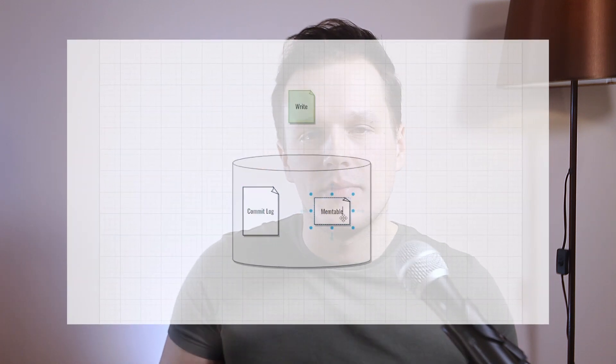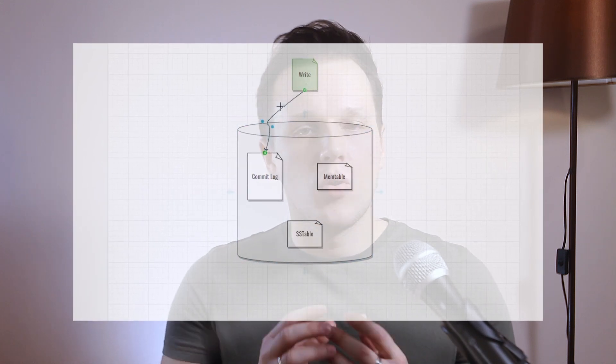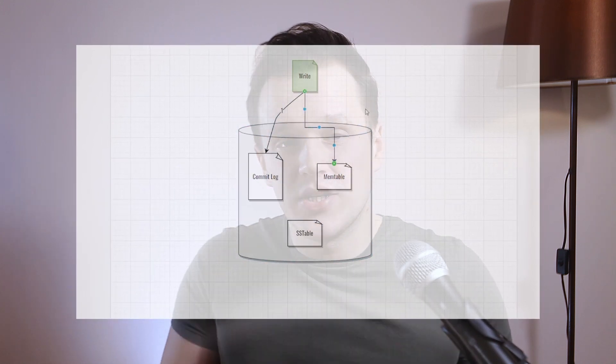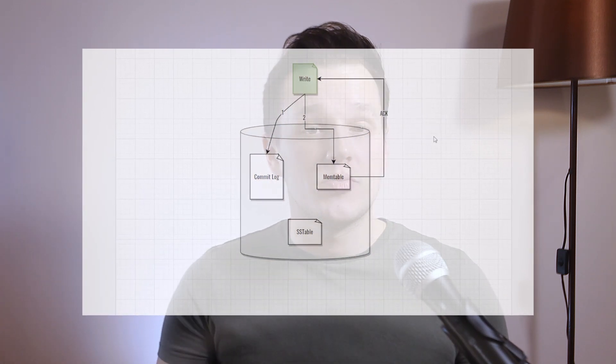Memtable is an in-memory data structure that is periodically written to immutable files called SS tables, or sorted string tables. In a nutshell, a memtable represents a row of storage data. After a mutation gets written to an SS table, the round-trip is considered complete and the acknowledgement returns to the client. Commit logs are faster since they have to write less data compared to SS table flushing. On startup, Cassandra reads the commit log from the last known good position and reapplies those changes to related memtables.